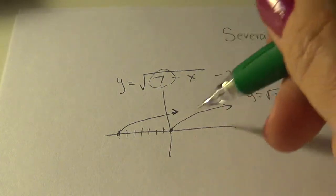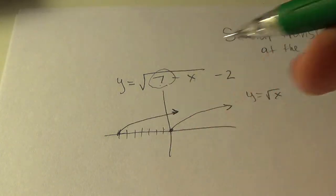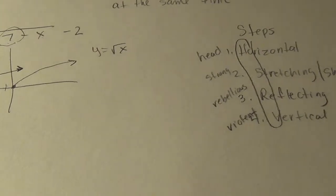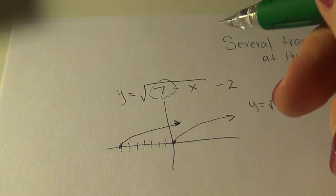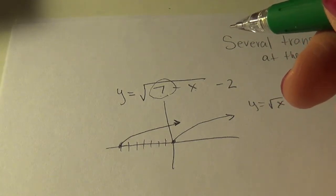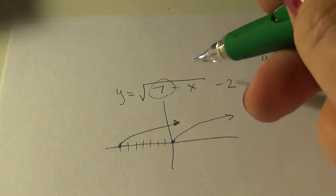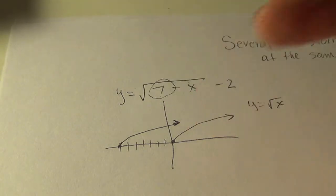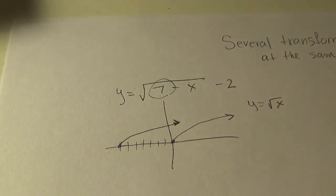So here's, we moved it 7 this way. Then we are going to do stretching and shrinking. In order for there to be a stretch or a shrink, there would be a number multiplied times the values in here or out here. So there's no stretching or shrinking.